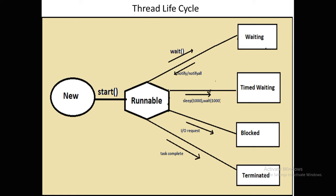The Timed Waiting state happens when you call the sleep() method and pass some milliseconds as a parameter. The thread goes to the Timed Waiting state, meaning it will wait for the time interval you passed into the sleep() or wait() method. For example, if you want to wait your thread for five seconds, you pass five thousand as a parameter to sleep() or wait(), and after five seconds it will wake up and come back to the Runnable state.